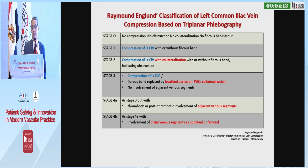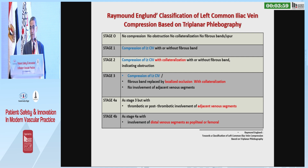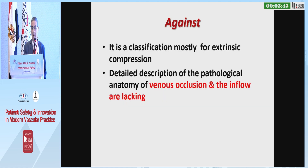A second classification is the Raymond-England classification of left common iliac compression based on triplanar phlebography. In stage 1, compression of the common iliac vein. Stage 2 adds collateralization. Stage 3 includes localized occlusion and collateralization. Stage 4a involves adjacent venous segments. Stage 4b involves distant venous segments. Again, this classification is mostly for extrinsic compression, and detailed description of pathological anatomy of venous occlusion and inflow are lacking.